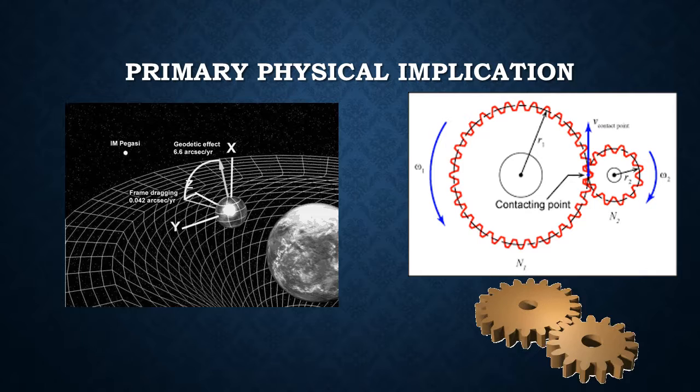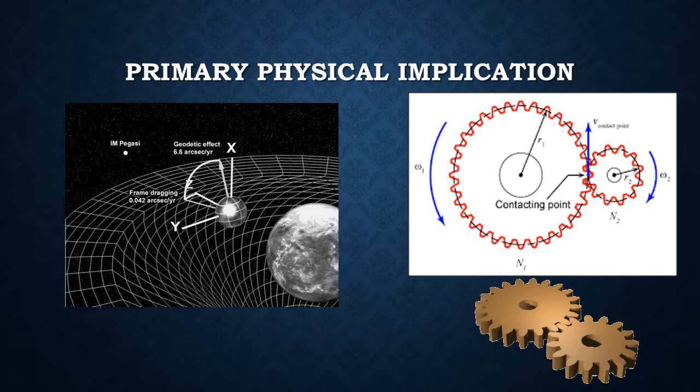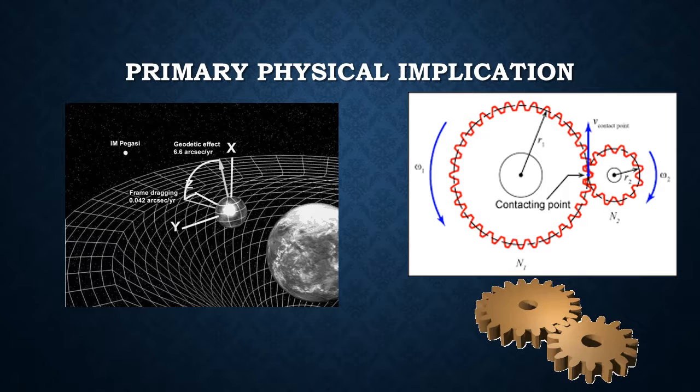For example, if you were to place a straw in a river where the river flows faster towards the center and slower at the banks, it will begin to rotate. Another way to think of this is by picturing two gears. If one rotates counterclockwise, it will cause the other to rotate clockwise, or in a counter-rotating fashion.